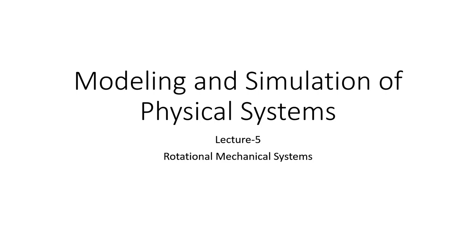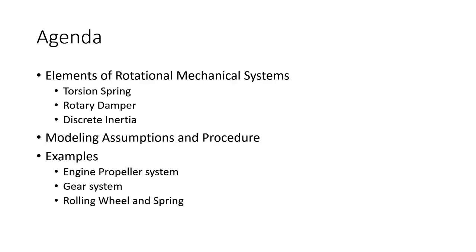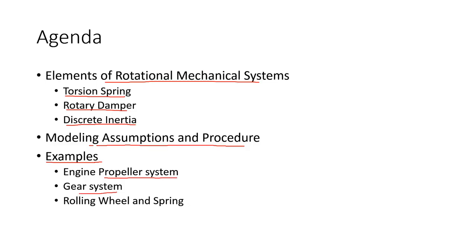Welcome to Lecture 5 on modeling and simulation of physical systems, in which we shall study rotational mechanical systems. Just like their translational counterparts, rotational mechanical systems find a lot of application in our everyday life. The lecture agenda includes modeling techniques for elements such as the torsional spring, rotary damper, and discrete inertia, illustrated with examples including an engine-propeller system, a gear system, and a rolling wheel with a spring.